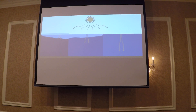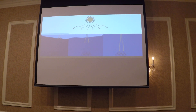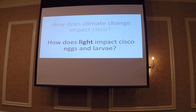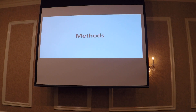Since there's such a drastic change from almost no light to full light during the time that cisco eggs are developing, we think there's potential for light to be impacting their development. The first question, since it's understudied, is: does light impact their development? And then if it does, how? That brings us back to the question of how does climate change impact cisco — but framed more specifically as: how does light impact cisco eggs and larvae? This brings us to my project, which is a pilot study to see the impacts of light on cisco eggs.